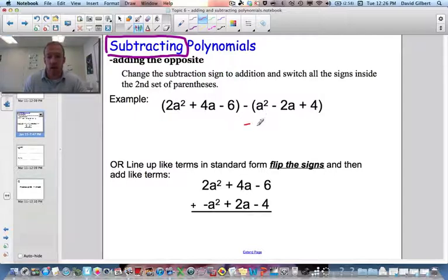So I would rewrite it as negative a² minus a minus 2 is a positive 2a. And then minus 4, it would be minus 4.